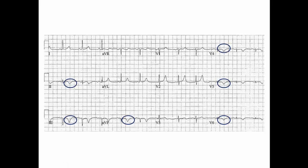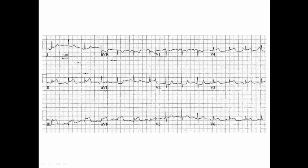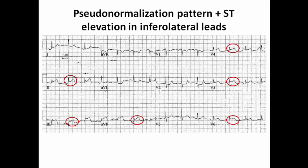So this patient, for example, is having resting T wave inversion in the inferolateral leads and then when he has chest pain he is developing positive T waves in these leads. Here it is associated with ST elevation as well. So here the patient had the pattern of positive T waves of pseudonormalization together with the ST elevation. So sometimes pseudonormalization may be alone, and sometimes it may be accompanied by ST elevation due to total occlusion of the culprit vessel.